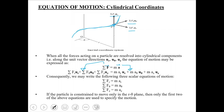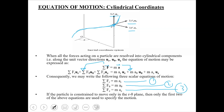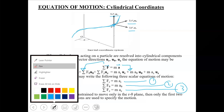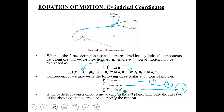Since this is a vector equation, it holds only if individual components on both sides are equal. Therefore: ΣF_r = m·a_r, ΣF_θ = m·a_θ, and ΣF_z = m·a_z. Now, if the particle is constrained to move within the r-θ plane only — planar motion — there is no acceleration along the z axis. Therefore, the third equation becomes ΣF_z = 0. This does not mean no force acts in z; rather, forces in z are balanced so there is no net unbalanced force.